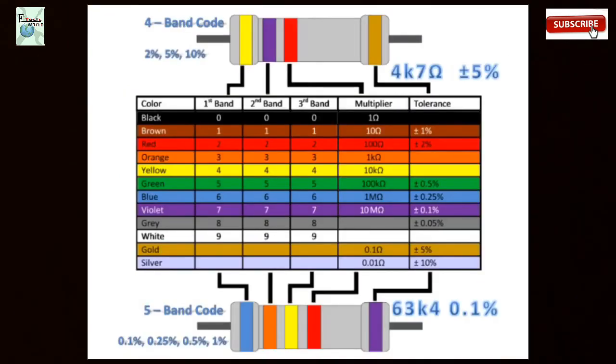Next, how to find the resistance value by using the color coding. Here 10 colors represent values from 0 to 9, and the remaining 4 colors are the tolerance values from plus or minus 1 to 10 percentages.